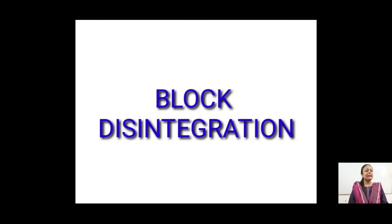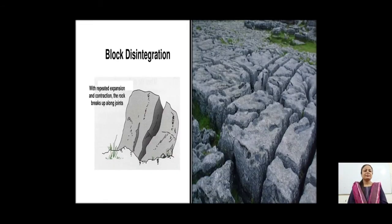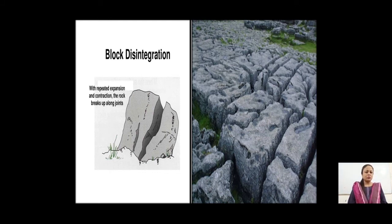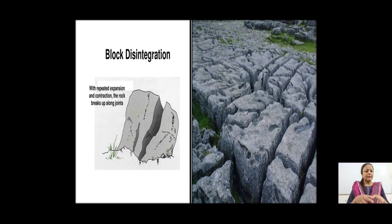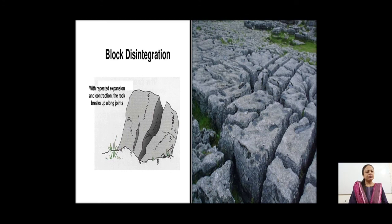The next type is block disintegration. In homogeneous rocks exposed to alternate expansion and contraction from heating during the day and cooling at night, cracks develop first, then widen, and finally the rock breaks into several pieces. You can see in the picture how large blocks in a wide area have disintegrated into smaller pieces. This is the concept of block disintegration.